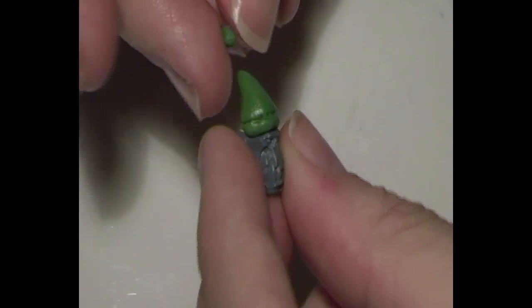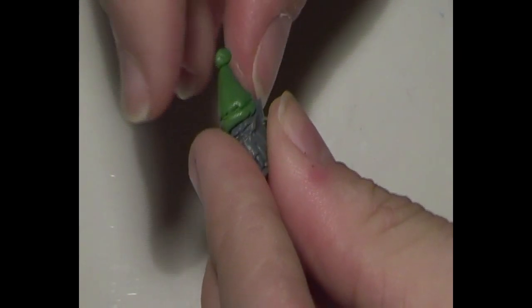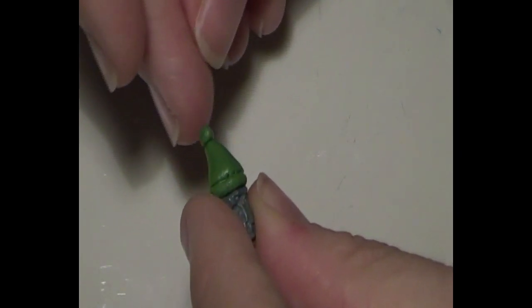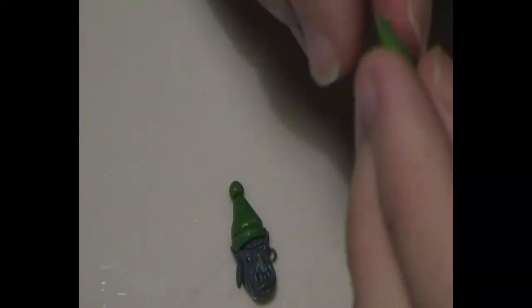Finally, you want to break off three tiny balls of green stuff. The first one, you want to roll it into a little ball and stick it on the very tip of the hat.